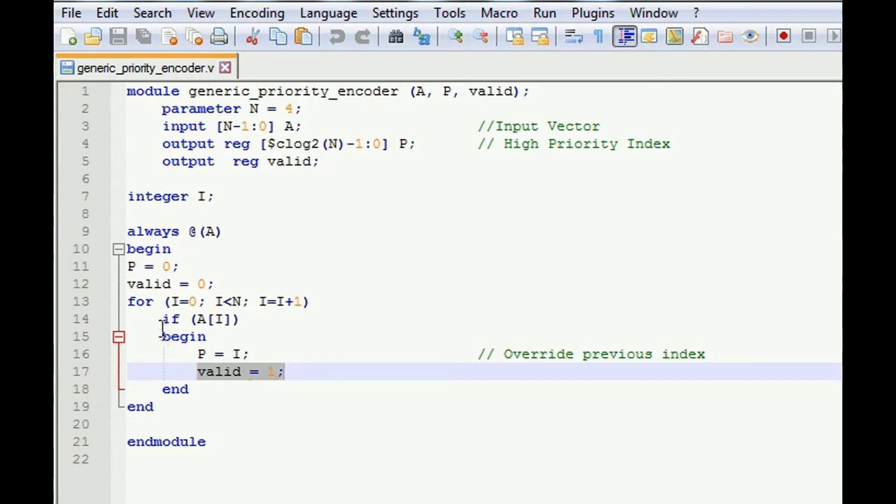But at the same time when the loop increments, i is equal to 1. If A[i] is equal to 1, then P will become 1. Previously P was 0, now it will become 1, because D0 is less priority bit than D1, I mean A1. Valid bit will remain high.